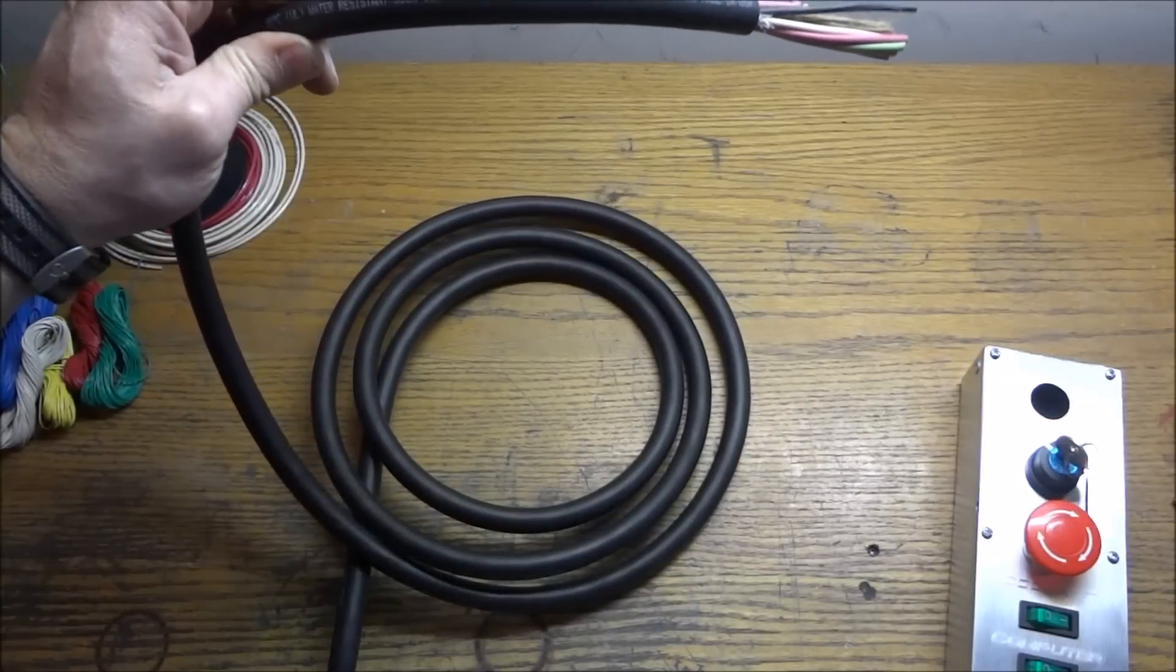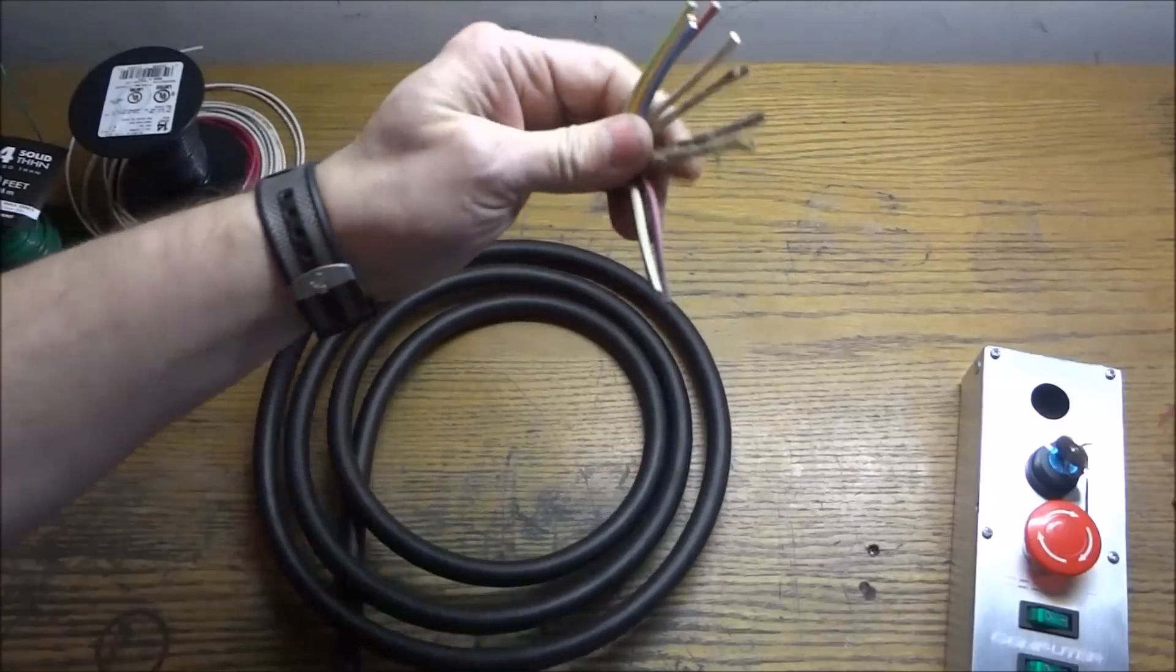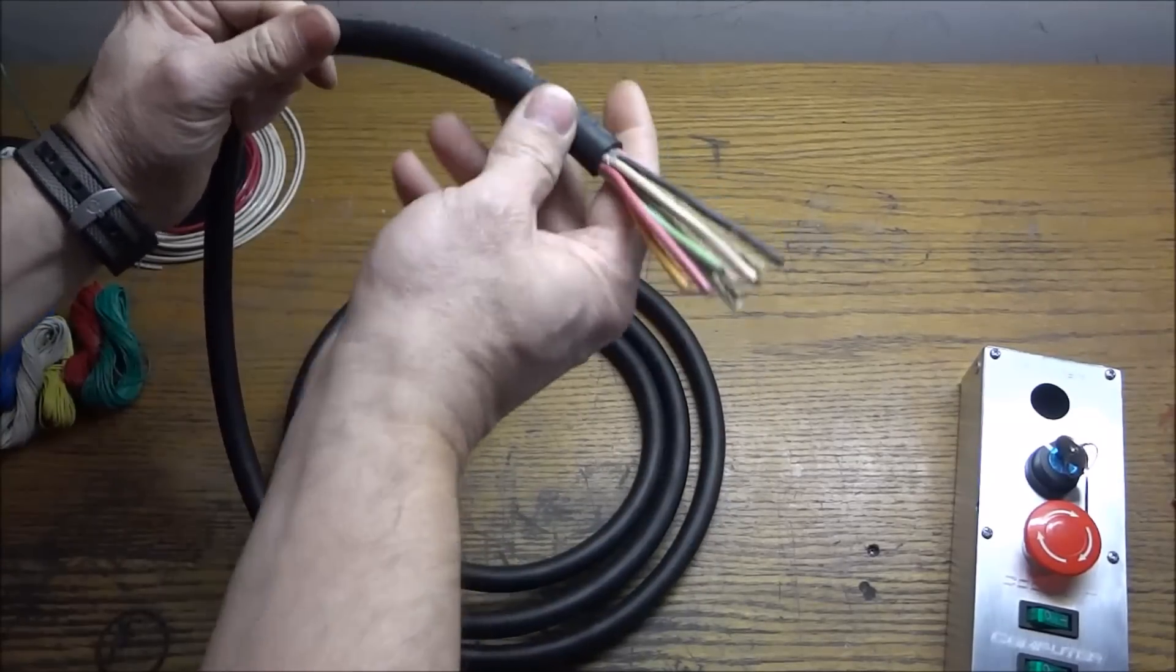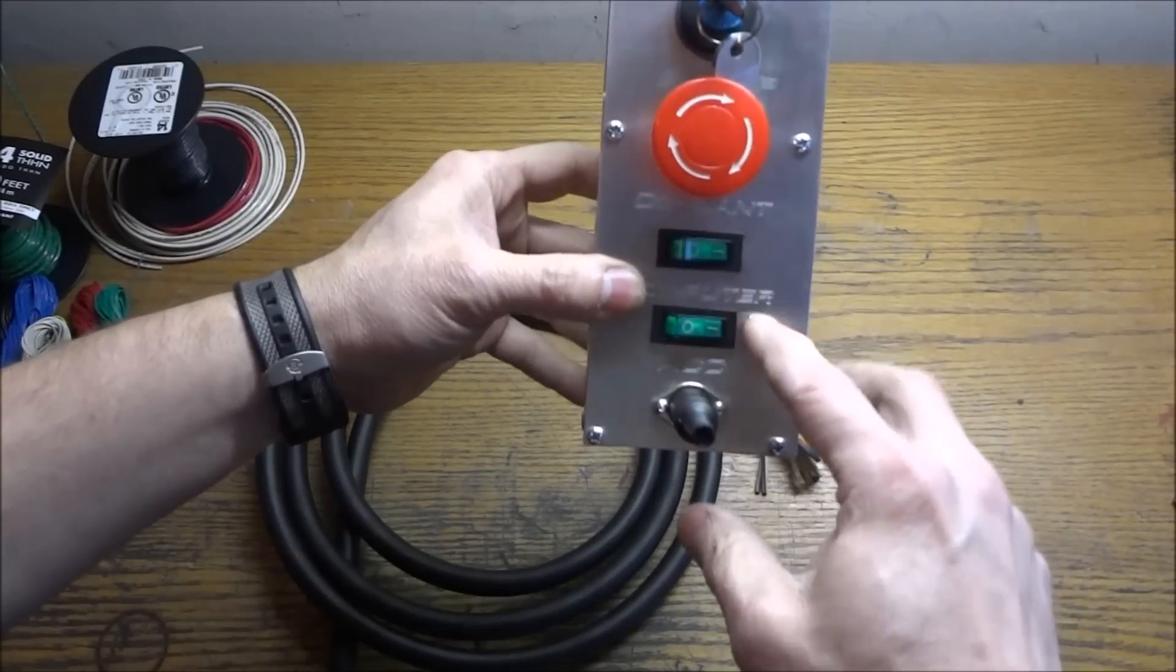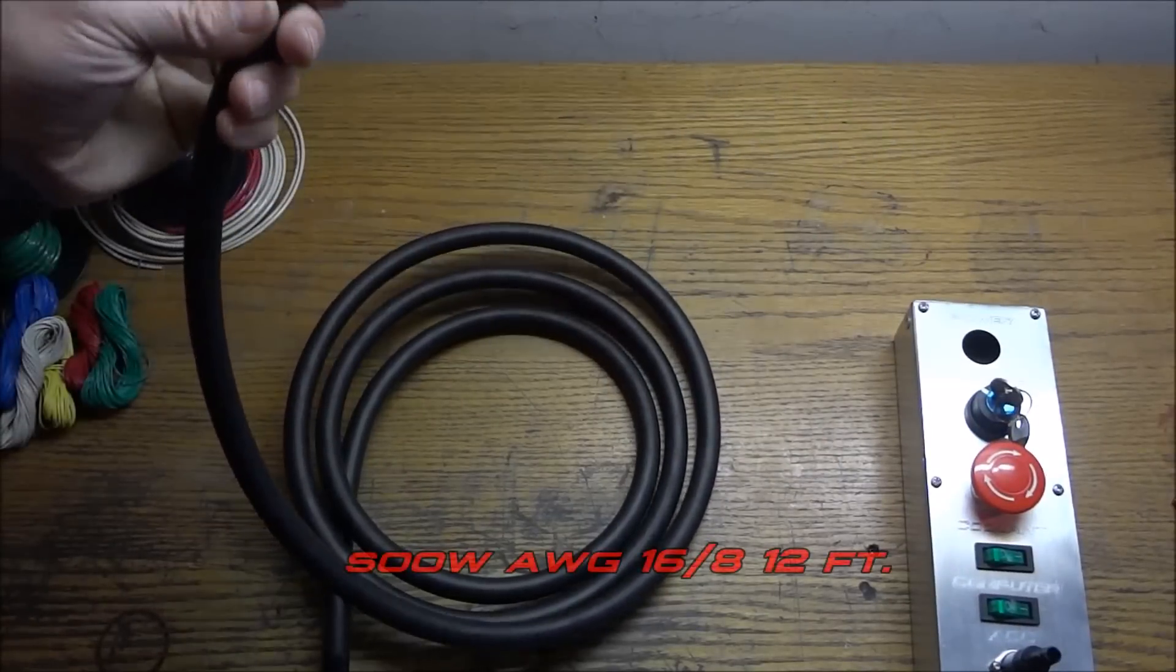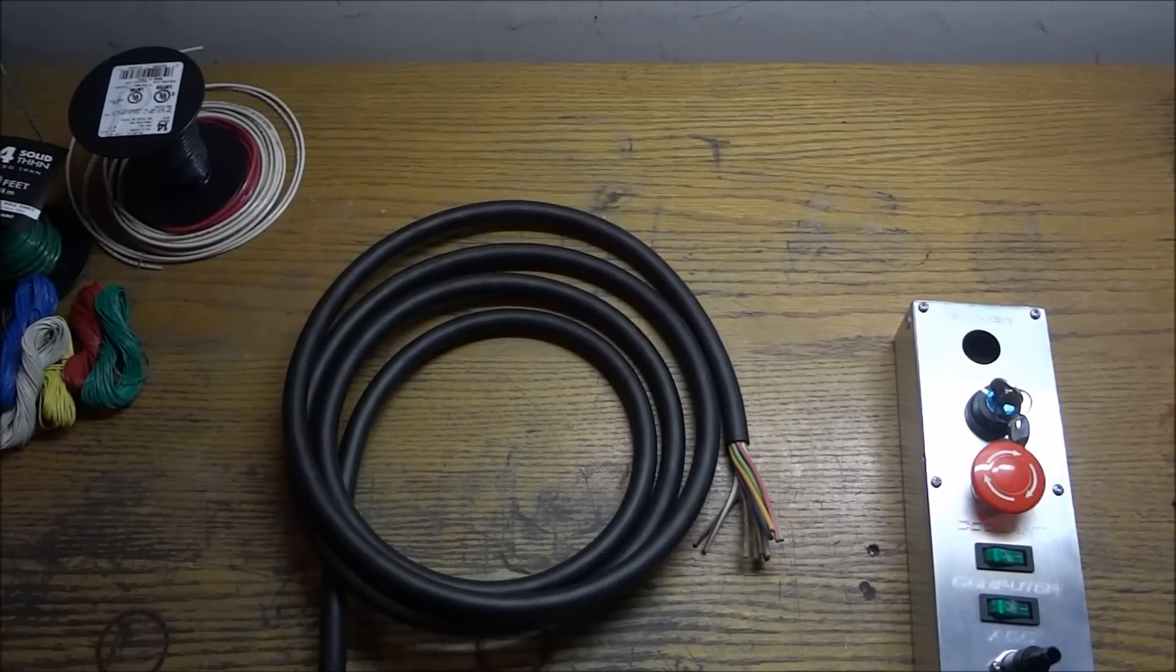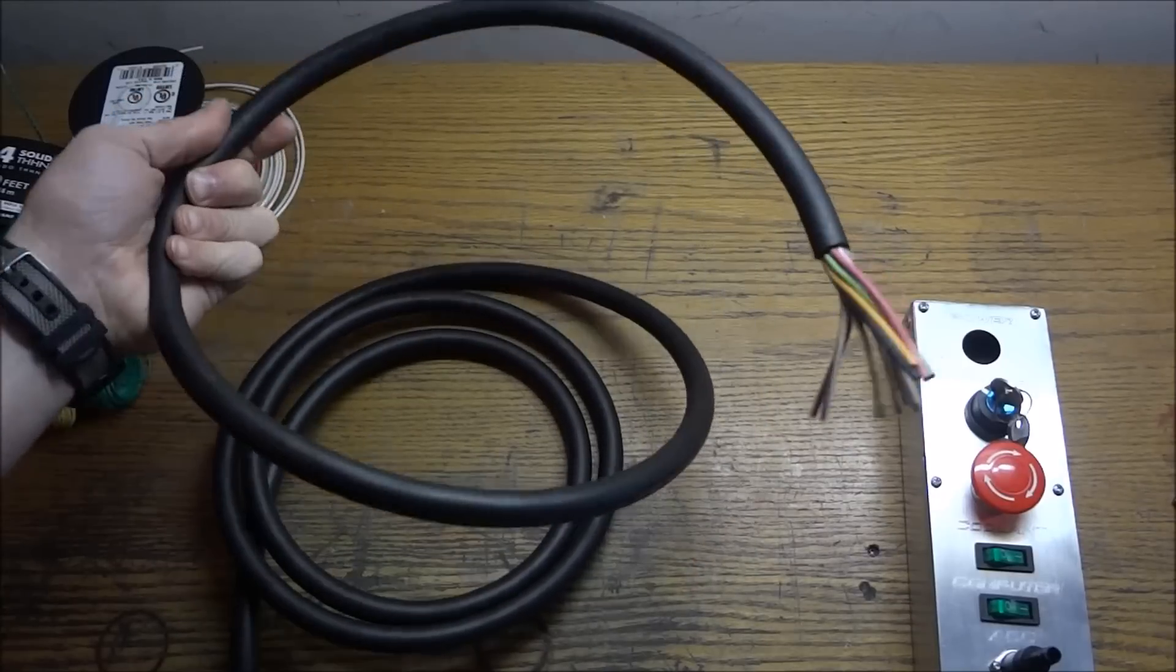This is 16 gauge 8 conductor cable and I had to go with 16 gauge because I need the amperage because these two switches are actually supplying power to the outlets on our control panel. This is also SOOW cable. Also got this from wiring cable to go and I believe I bought 20-25 feet of this. This is all very reasonable. Less than a dollar a foot.